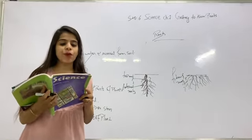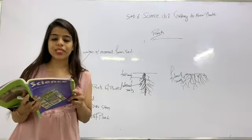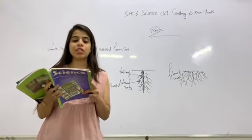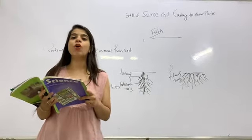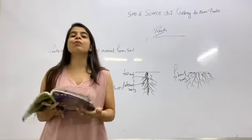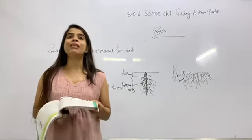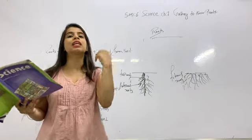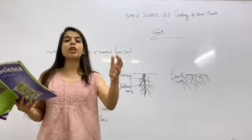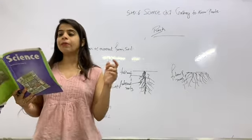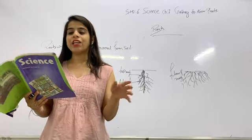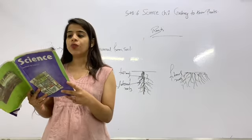We eat some roots as food — like carrot, radish, sweet potato, and turnip. These are all roots consumed as food. So if asked: which roots are consumed as food? The answer is sweet potato, radish, carrot, and turnip.